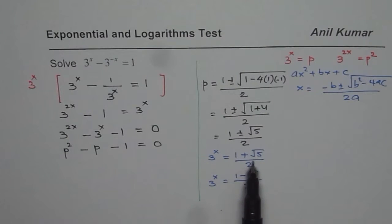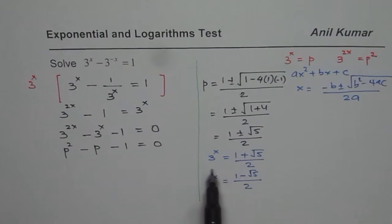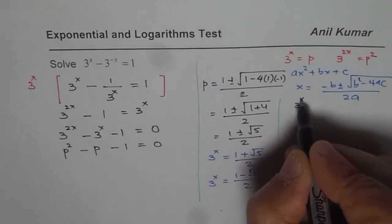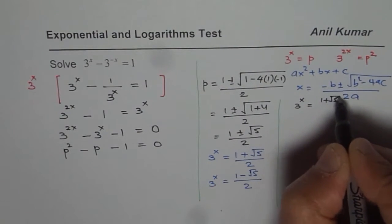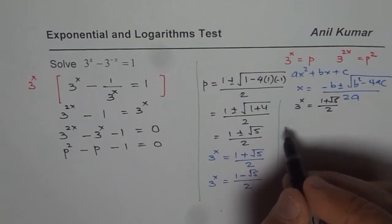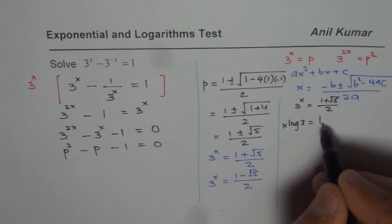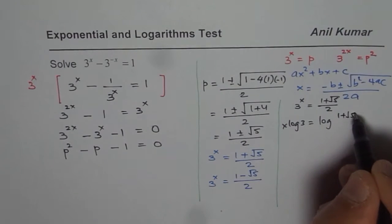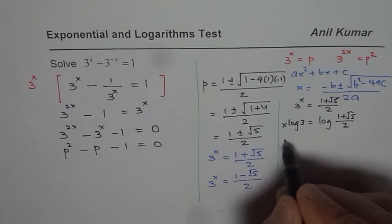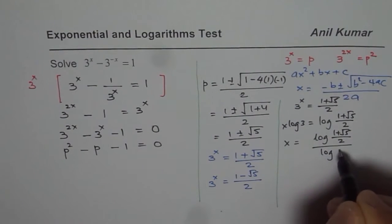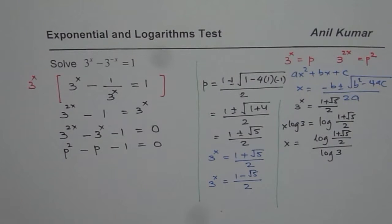To solve these equations, we can take log and then solve. So the first one is 3 to the power of x equals to (1 plus square root of 5) over 2. When we take log, we get x times log of 3 equals to log of (1 plus square root of 5) over 2. From here we can say x equals to log of (1 plus square root of 5) over 2, divided by log of 3.